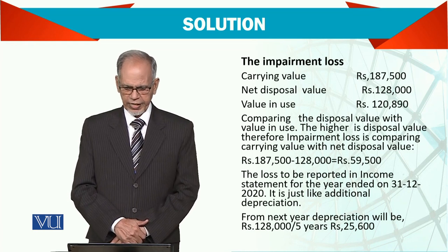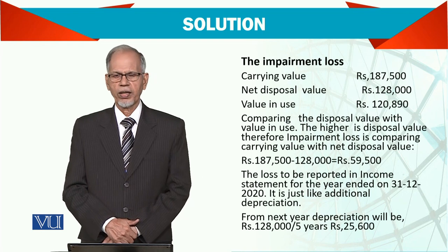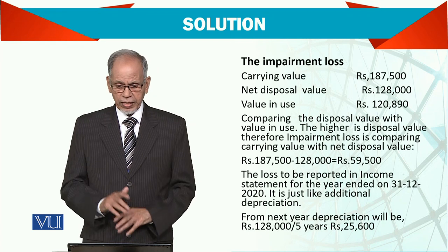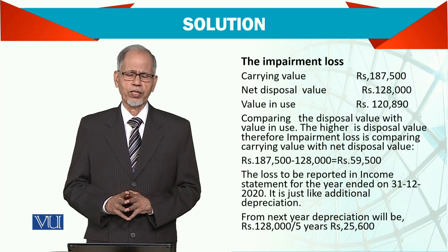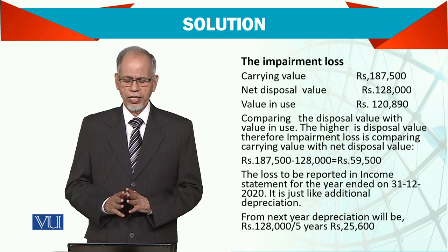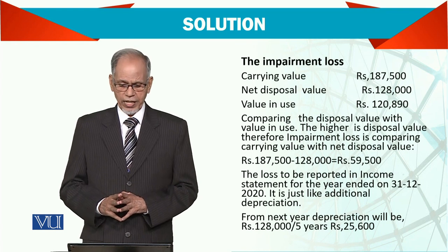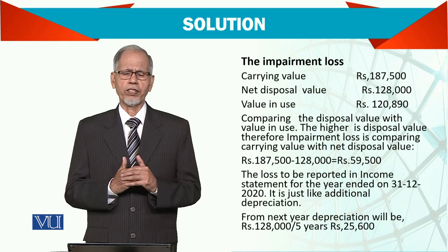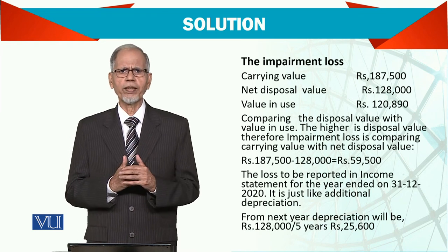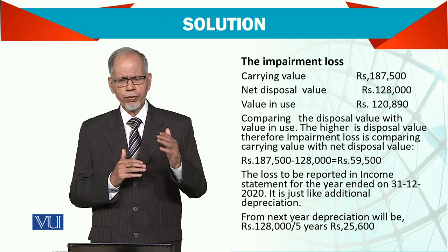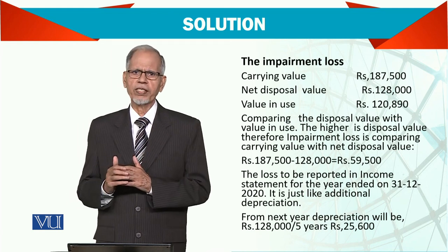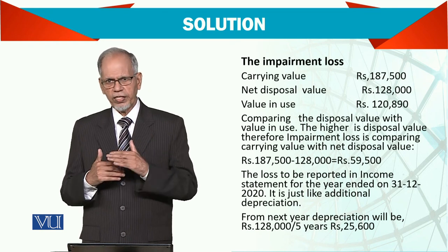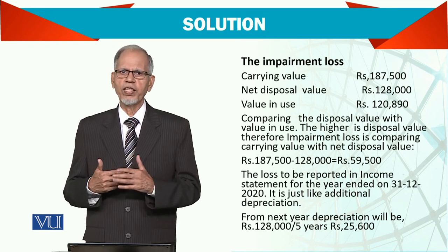It is just like additional depreciation. Now another important thing to remember: when calculating these two values — the recoverable value — that is the key. Then compare the current carrying value in the balance sheet, which we sometimes call the book value. We see the book value and compare it with the higher of the two. If there is a reduction in the value, that is impairment.